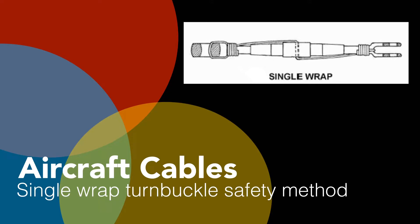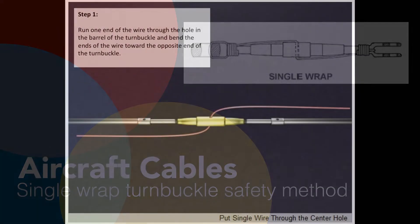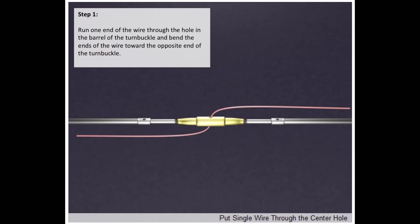Aircraft Cables Single Wrap Turnbuckle Safety Method. Step 1: Run one end of the wire through the hole in the barrel of the turnbuckle and bend the ends of the wire towards the opposite end of the turnbuckle. This is your first step.